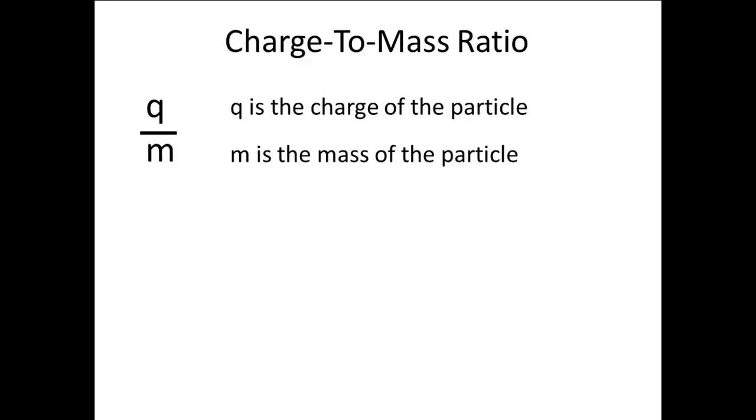If one tries different metals for the cathode, the same charge to mass ratio is produced, which strongly suggests that we are getting the same particle, which is the electron. It has a very large charge to mass ratio. Compared to the previously determined charge to mass ratio for an ionized hydrogen atom, the charge to mass ratio for the electron is nearly 2,000 times as great.